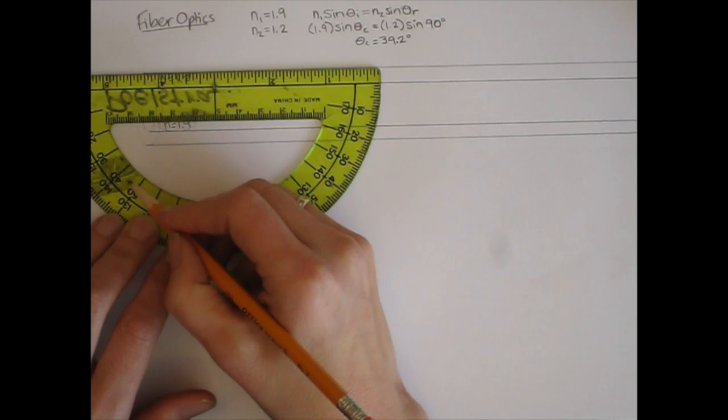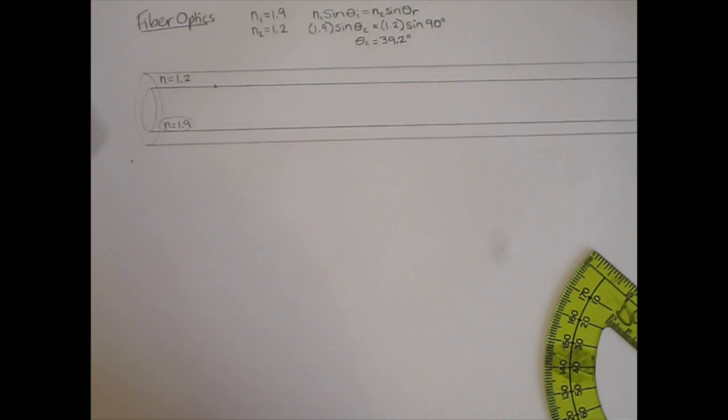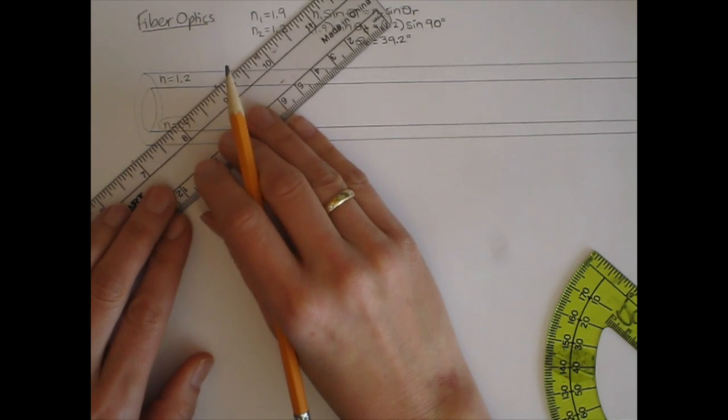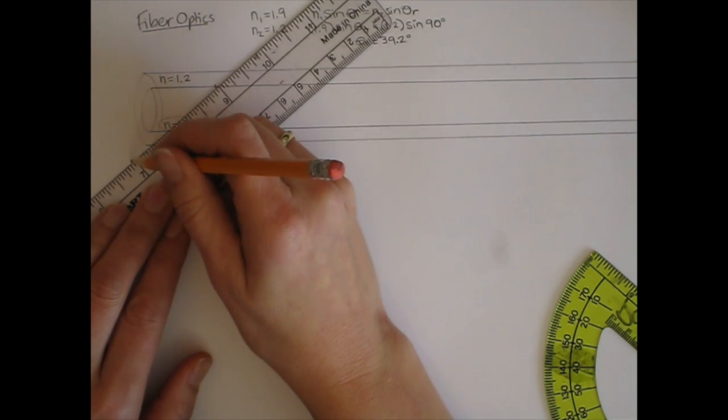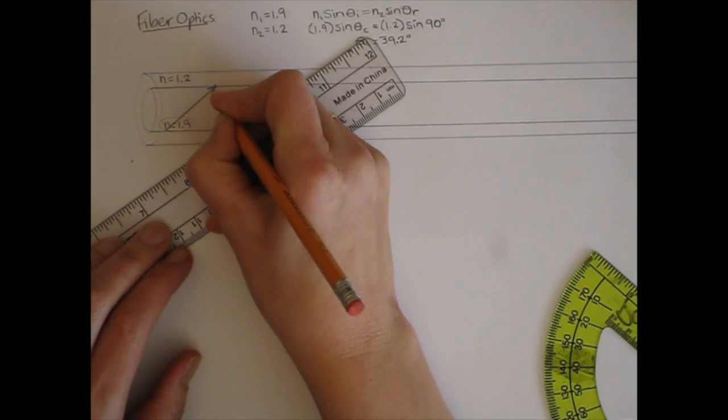10, 20, 30, 40, 50. So I'm going to have my light ray so I hit this boundary with an incident angle of 50 degrees. But I'm starting inside, inside the core.